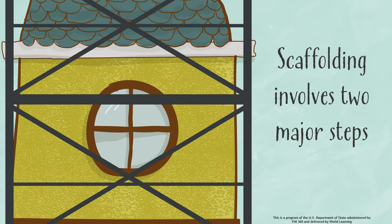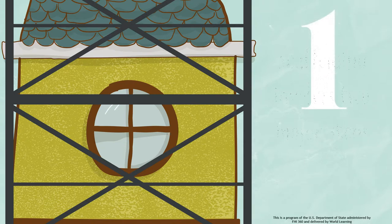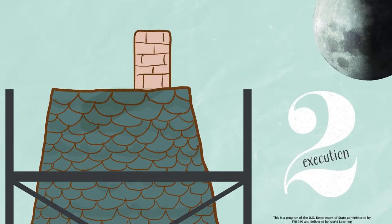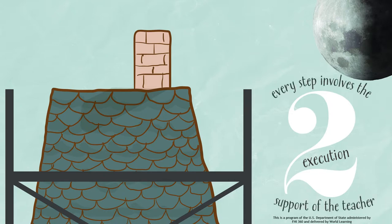Scaffolding in a CBI classroom involves two major steps. The first step is the development of lesson plans to structure the lesson so that it transitions from what the students already know to acquiring new concepts. In the second step, the execution of the lesson plan takes place, and every step involves the support of the teacher.